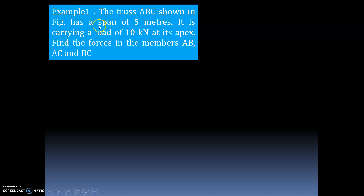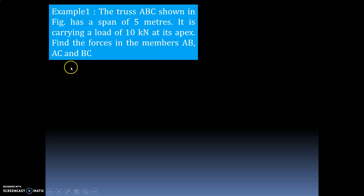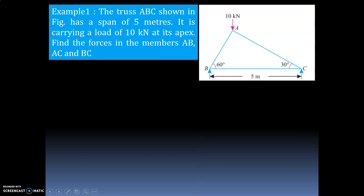Let us take this example. The truss ABC shown in the figure has a span of 5 meters. It is carrying a load of 10 kilonewton at its apex. Find the forces in the members AB, AC, and BC. A vertical load is acting at A, and at B and C you have to calculate what is RB and RC.